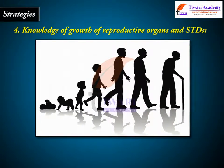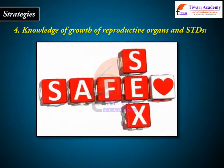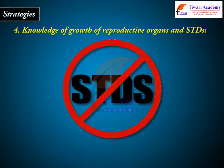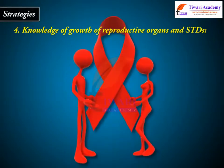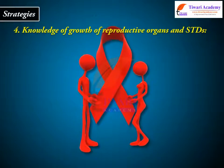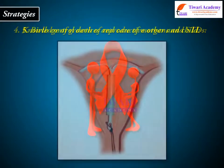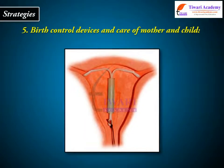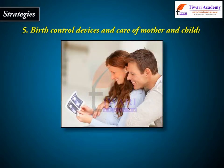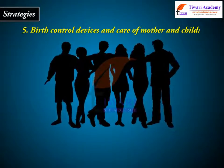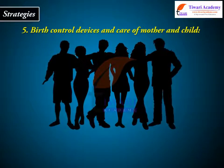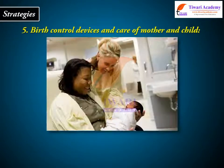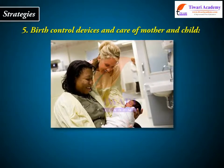5. Adolescence — the period of rapid growth between childhood and adulthood. Safe and hygienic sexual practices should be promoted. 6. Sexually transmitted diseases — awareness about STDs is essential. 7. Birth control devices — knowledge and availability of birth control devices are important strategies.